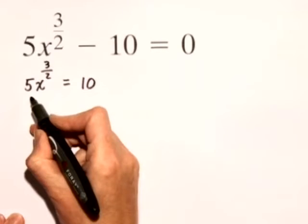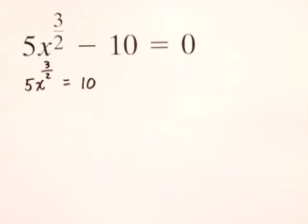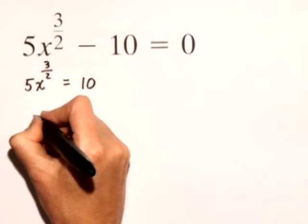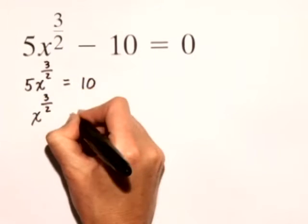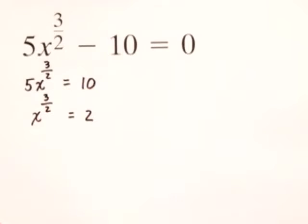Next, let's divide both sides of this equation by 5. When we do that, we'll have x to the 3 halves power is equal to 2.